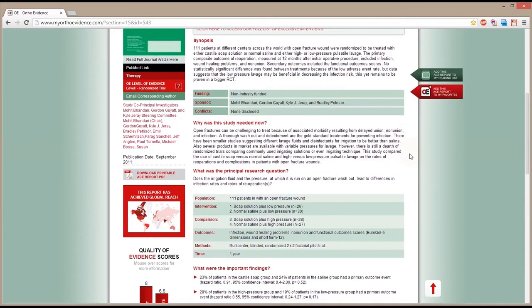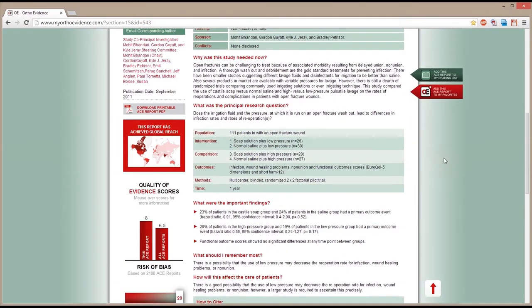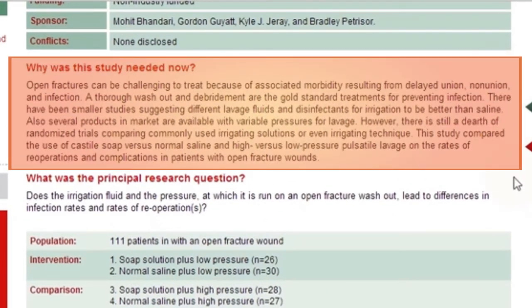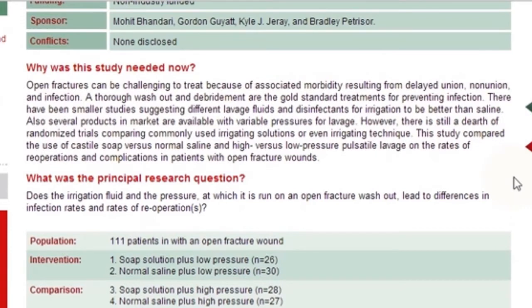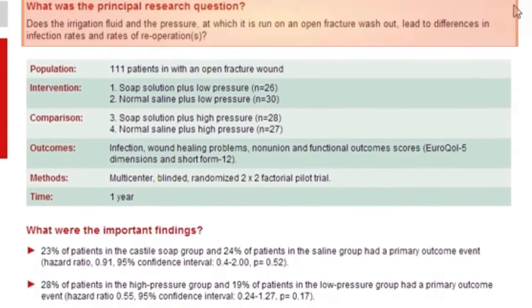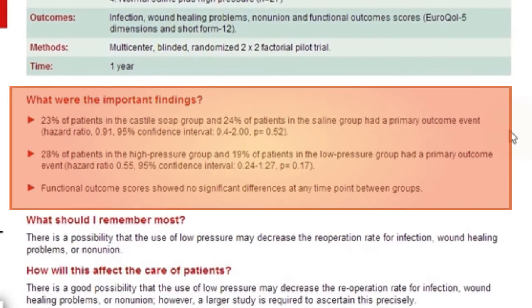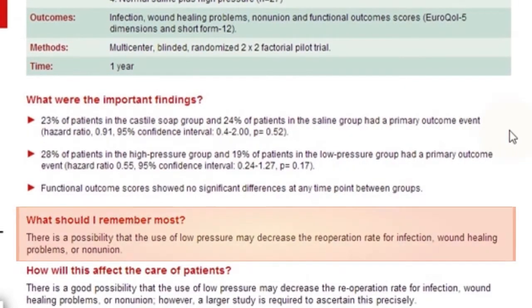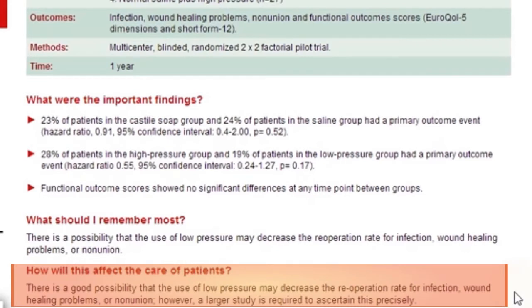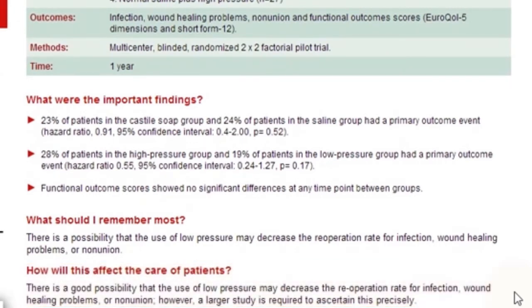The remainder of the report is dedicated to answering five main questions: Why was this study needed now? — providing basic background on the topic area and establishing the need for the study. What was the principal research question? — presenting a clear research question and main objective. What were the important findings? — identifying all pertinent results. What should I remember most? — distilling findings into a simple takeaway message. And how will this affect the care of patients? — providing a final statement on how findings may affect patient care, and a call to action for research questions that remain unanswered.